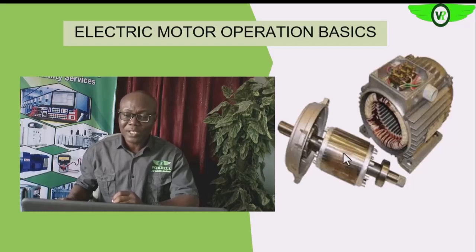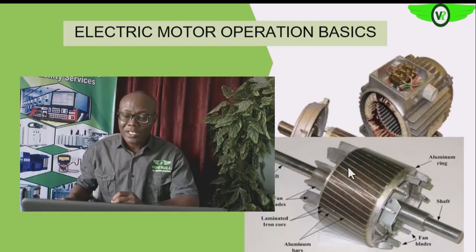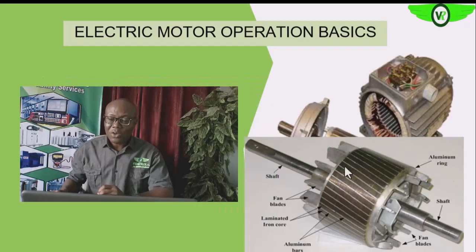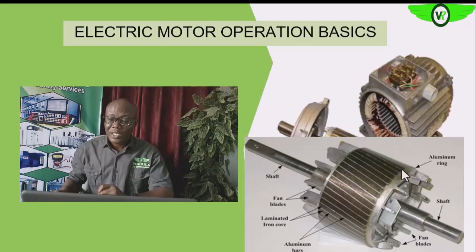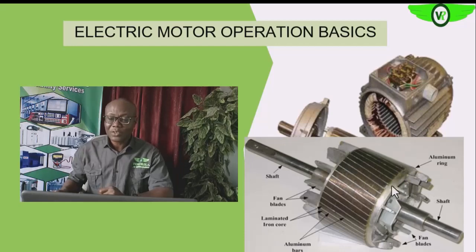If you look at the rotor, you will see that it has conducting bars. These conducting bars take the place of the windings that you have in the rotor. At each end of these conducting bars, we have the shorting ring — an aluminium ring stacked on this particular rotor, as you can see.